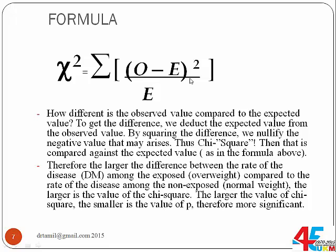We compute observed minus expected. Sometimes we get a negative value, sometimes positive. To nullify the negative value, we square it — that's the chi-square. However, the difference is very much dependent on the value itself, so we divide by the expected value, as in this formula. Therefore, the larger the difference between the rate of the disease among the exposed compared to the non-exposed, the larger the value of the chi-square.